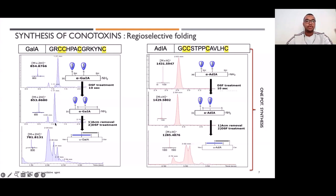We can see that with this regioselective approach, it takes less than 10 minutes to have one isomer. Compared to oxidative folding, it takes days or weeks to have the right isomer of the native conotoxin. We did the same thing with AD1A, and it seems to be very effective with this regioselective approach. At the end of the reaction, we obtain this isomer here.